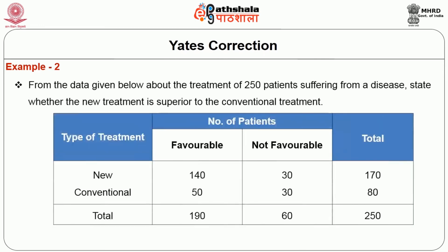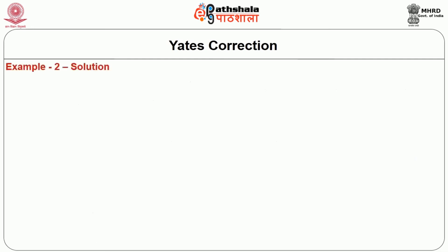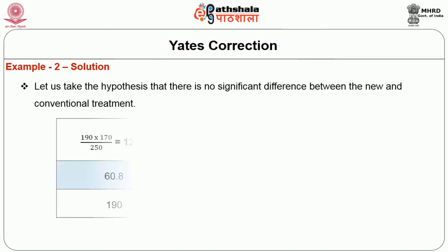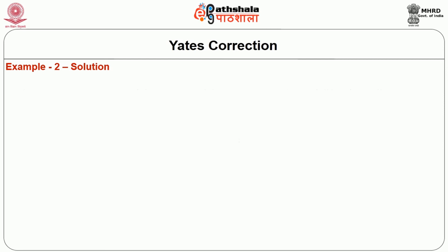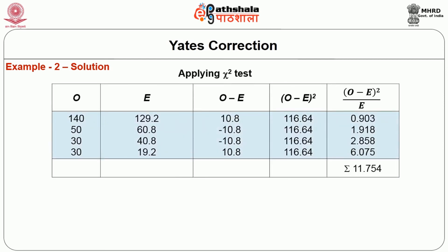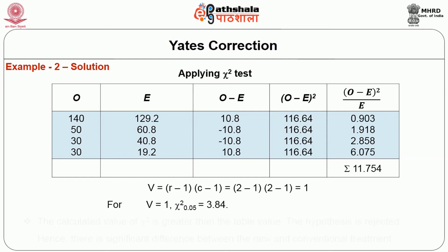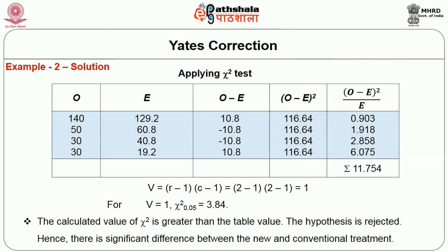Example: From data about the treatment of 250 patients suffering from a disease, we test whether new treatment is superior to conventional treatment. The hypothesis is that there is no significant difference between the new and conventional treatment. The expected frequencies are calculated, observed and expected frequencies and their deviations are listed in a table. The calculated chi-square value is greater than the table value; therefore the hypothesis is rejected. We conclude there is a significant difference between the new and conventional treatment.